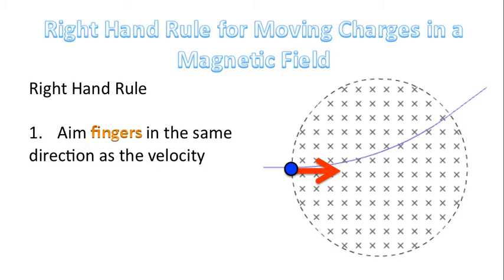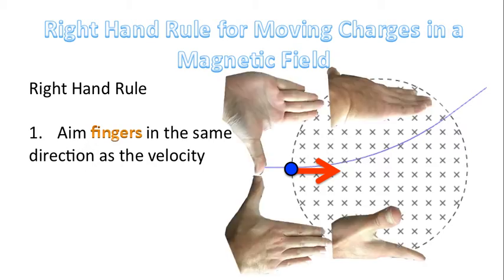So here's the right hand rule. Step one: aim your fingers in the same direction as the velocity. In this situation, we can say that the charged particle is heading east. Notice these are four different orientations of the hand, but the fingers are always aimed in the same direction — in the direction of the arrow, the direction of the velocity.